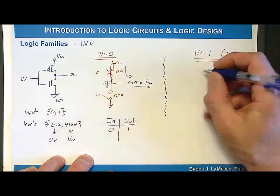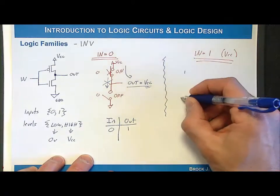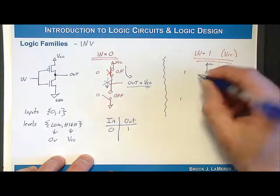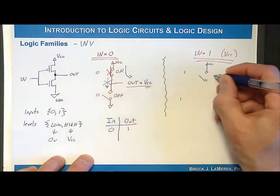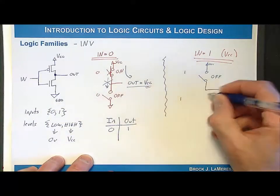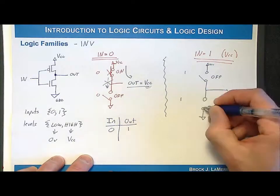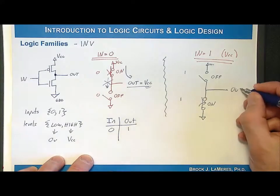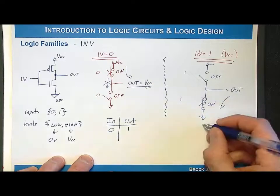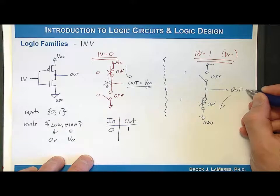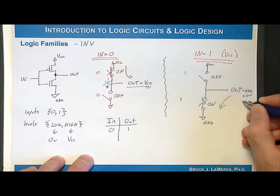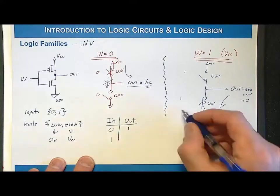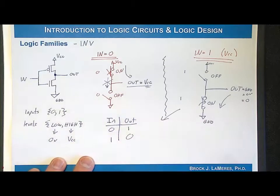Now let's look at when input N is a 1. I look at my PMOS transistor: when I have a 1 on the control of my PMOS, it is open — off. Then when I look at my NMOS with a 1 on the control, it is closed — on. So I've shorted the output to ground, creating an output equal to ground, also equal to 0 volts, also equal to a logic 0. When my input was a 1, my output was a 0. I have successfully created a CMOS inverter.